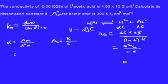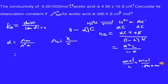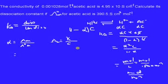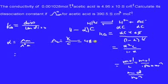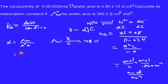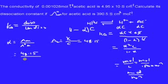It doesn't matter if you take moles per liter, moles per 1000 cm³, or moles per meter cubed — these are equivalent. We take moles per liter and get the molar conductivity value as 48.15 S·cm²·mol⁻¹. The limiting molar conductivity value is given as 390.5 S·cm²·mol⁻¹. So alpha equals 48.15 divided by 390.5.